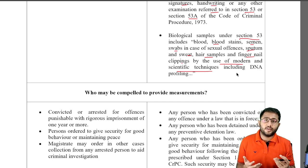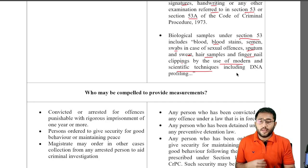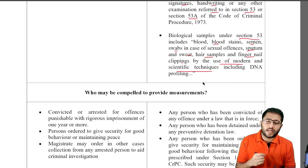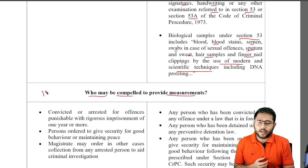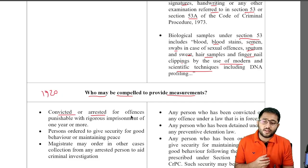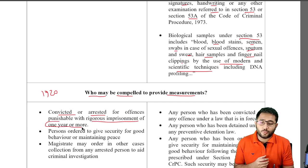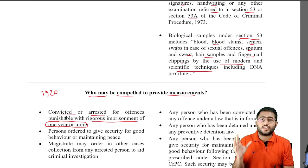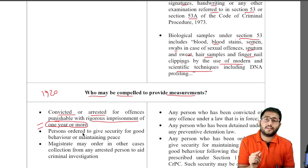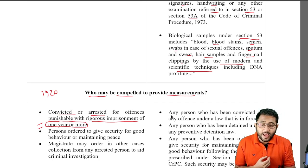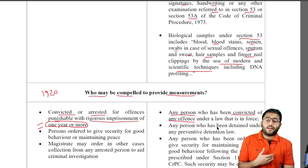This expansion is a really good thing — a person can be not only profiled but identified from scenes of investigation and crime. But there is a certain problem when we look at who may be compelled to provide these measurements. In the 1920 Act, it said that a person who is convicted or arrested for offences punishable with rigorous imprisonment of one year or more. Now, with the Criminal Procedure Identification Bill, any person who has been convicted of any offence can be compelled to provide measurements.